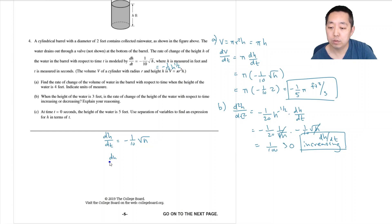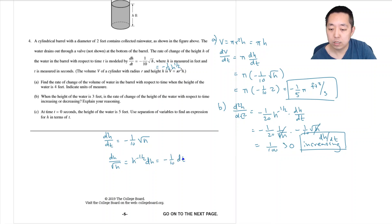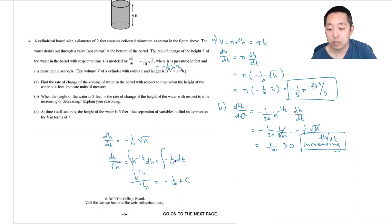So h to the negative one-half dh equals negative one-tenth dt. Integrating both sides gives h to the one-half divided by one-half equals negative one-tenth t plus C, which simplifies to two times h to the one-half equals negative one-tenth t plus C.